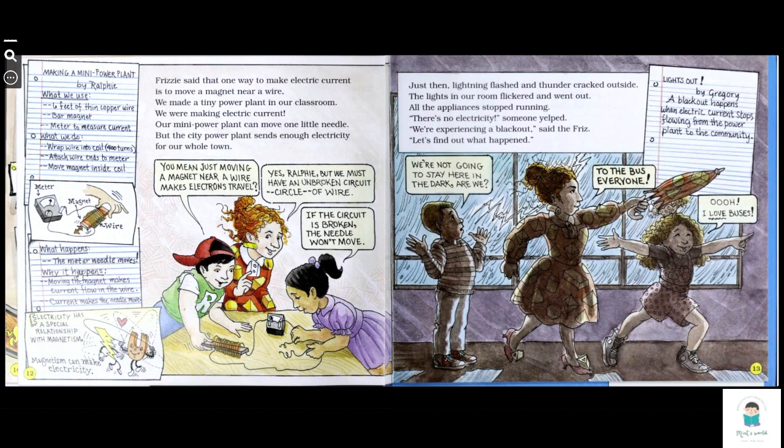Wrap wire to coil 400 turns, attach wire ends to meter, move magnet inside coil. What happens? The meter needle moves. Moving the magnet makes current flow in the wire. Current makes the needle move. Electricity has a special relationship with magnetism.